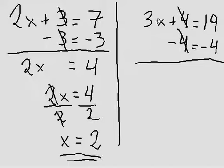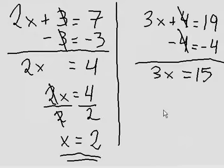The 4s cancel out so 3x comes down. 19 minus 4, 15. Okay, so now I have 3x is equal to 15. How do I isolate x? I should just divide both sides by 3.